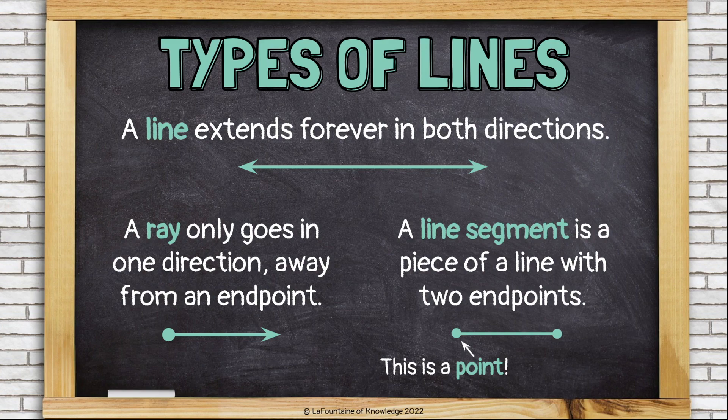You'll notice the line has arrows on both sides to show that it goes on in both directions. The ray has an endpoint on one side and an arrow on the other side, and a line segment has two endpoints.